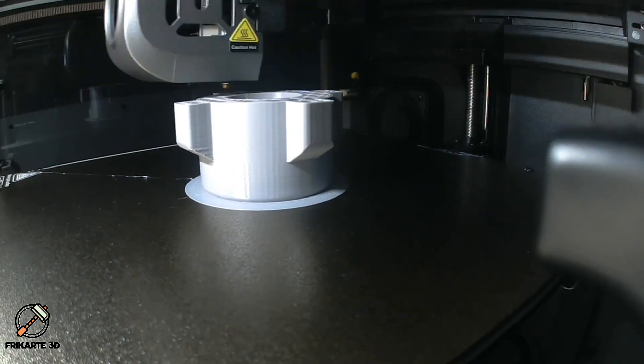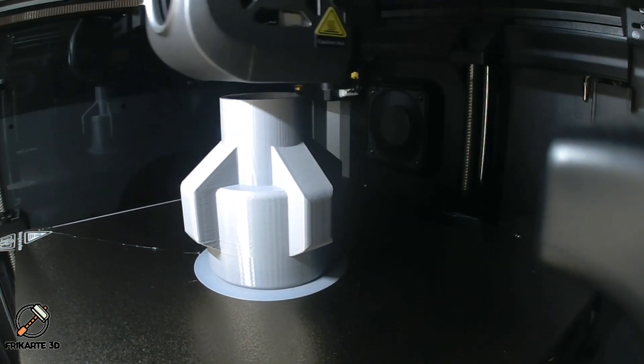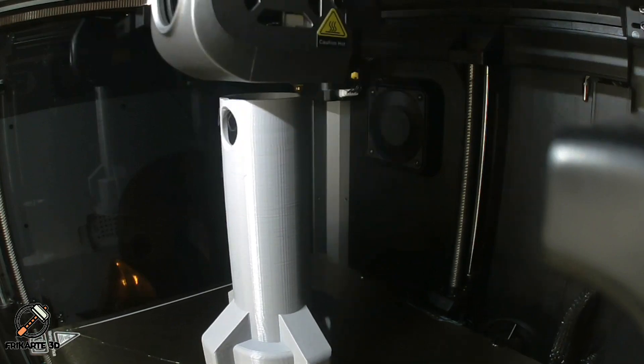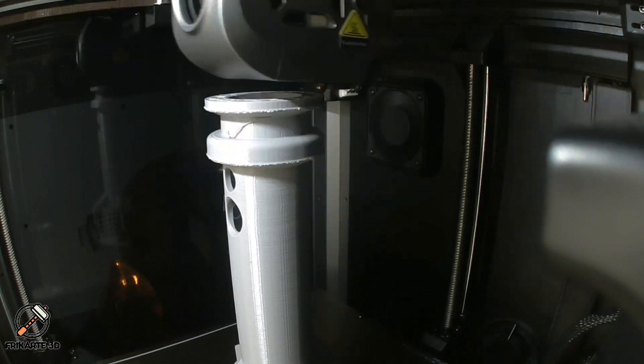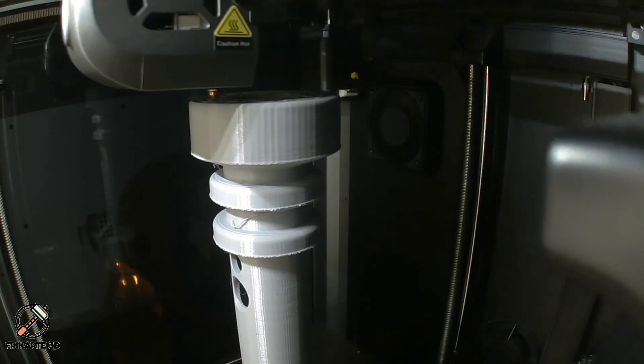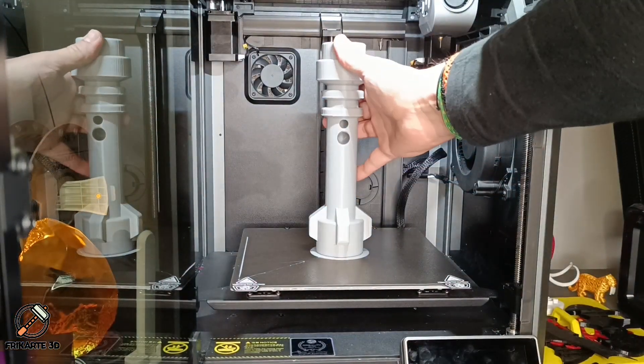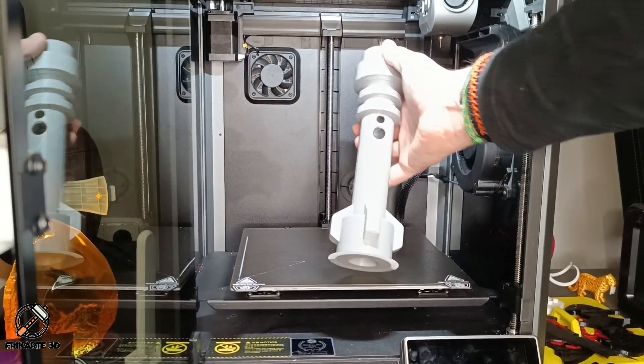As you can see in the time-lapse, I printed the hilt I designed with my Creality K1 using Polymaker PolyLite Gray PLA. It can be printed without supports using standard settings, but I added a brim to avoid adhesion issues for being a tall model. I fixed the uploaded model for a better look on overhangs.